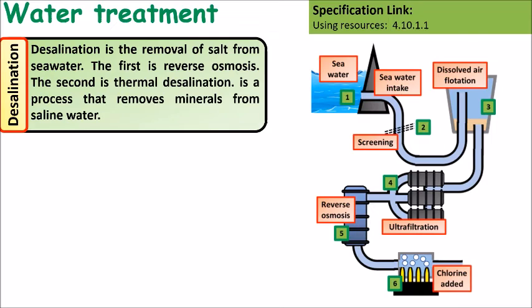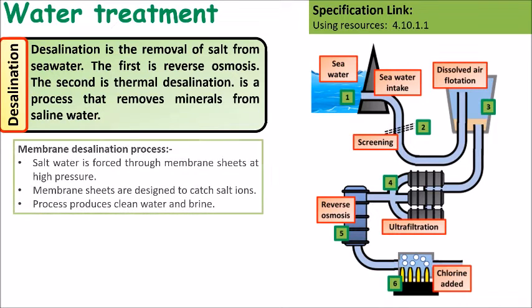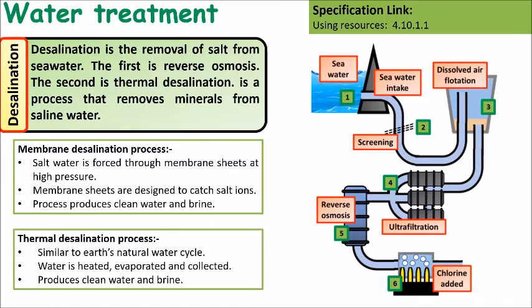Desalination is the removal of salt from seawater. The first type is by reverse osmosis and the second type is by thermal desalination. There are two main ways that you need to know: membrane desalination and thermal desalination.